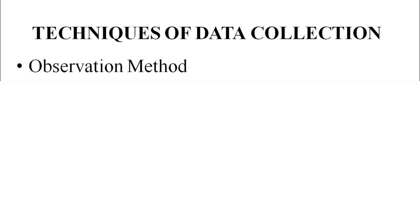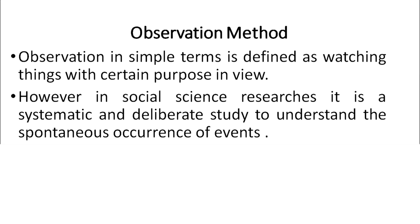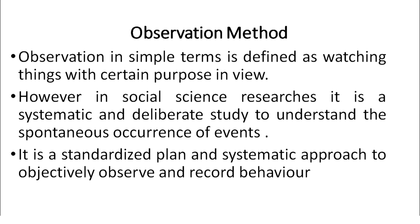To start with the observation method — observation in simple terms means watching things with a certain purpose in view. But when we use it in research, it means a specific purpose which should be in the researcher's mind when he or she tries to observe a particular social phenomenon. In social science researches, it is a systematic and deliberate study to understand the spontaneous occurrence of events — a standardized plan and systematic approach to objectively observe and record behavior.